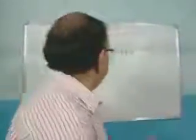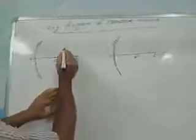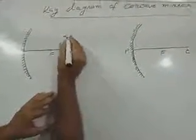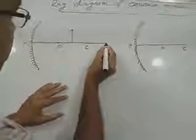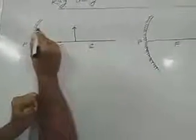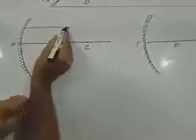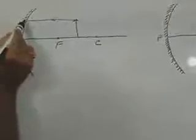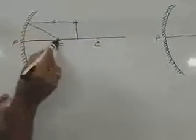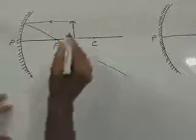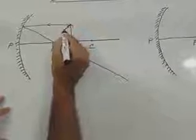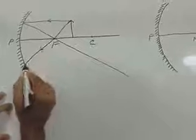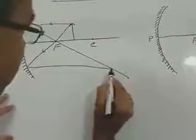Next ray diagram: when the object is placed in between F and C. One ray passing parallel to the principal axis — after reflection, it will pass through the principal focus. The second ray passes through the principal focus, and after reflection, it will be parallel to the principal axis.